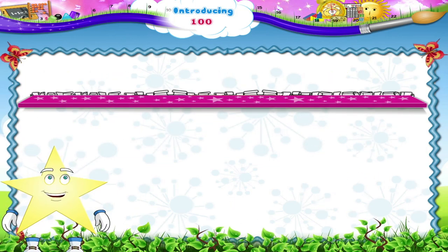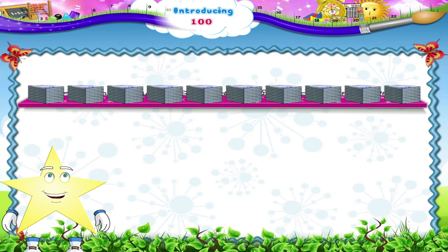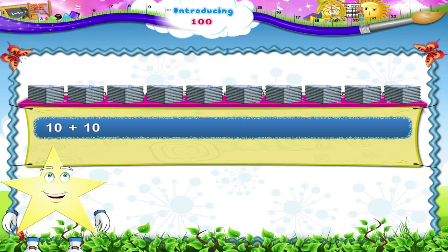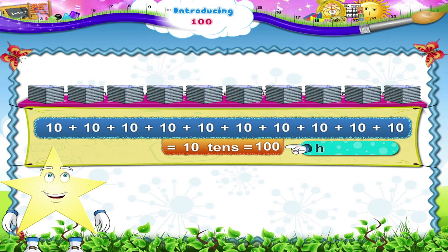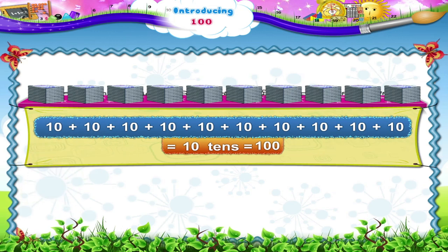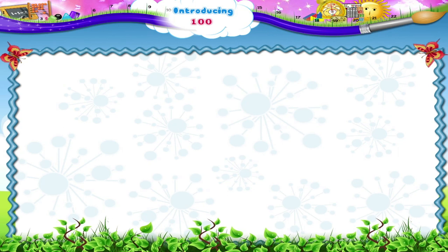Finally, let's count these books, Tari. Each pile has 10 books in it. So, 10 plus 10 plus 10 plus 10 plus 10 plus 10 plus 10 — that's 10 tens. One hundred books! One hundred, Tari. H-U-N-D-R-E-D. Hundred.